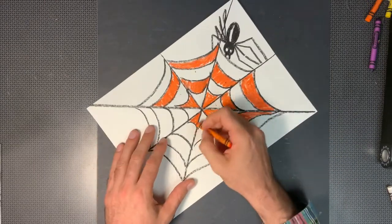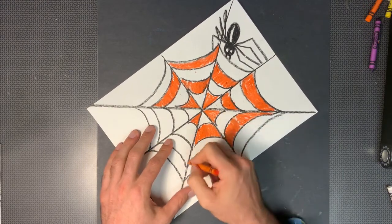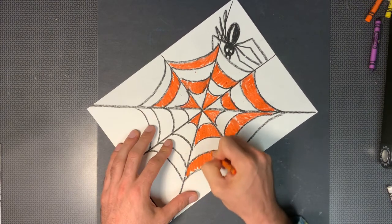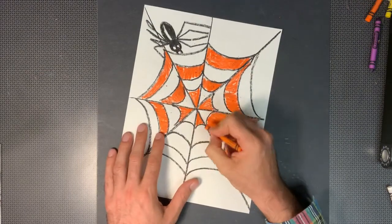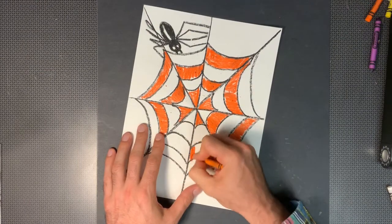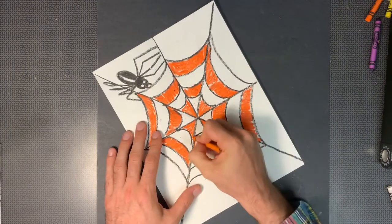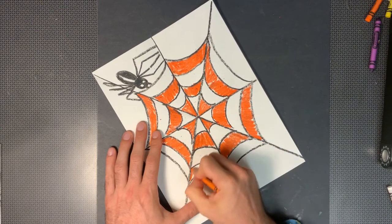So we have white. I'm going to do orange. So our pattern is white, orange, white, orange or orange, white, orange, white depending on which piece of the web you're working on. So I have orange, I have white, I need orange. I have white, I need orange, white and then orange.